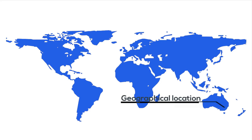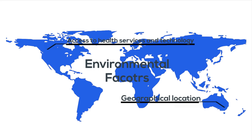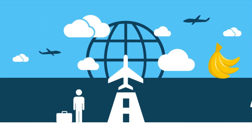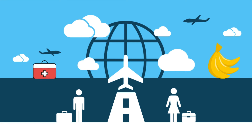Geographical location, access to health services and technology are environmental factors that affect your health. If you live in a place that has little access to fresh food, people your own age or health services, such as in rural Australia, then you are more likely to have poorer health. However, if you have access to health services and technology, you can be treated more easily when sick and can recover faster from accidents.